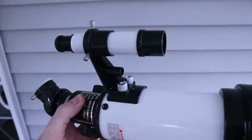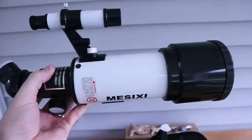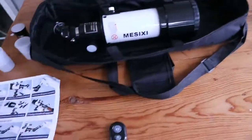So the finder scope that you can see here is held down by two bolts and really that's the only piece you have to assemble to the telescope itself.